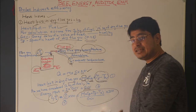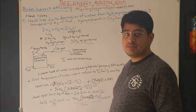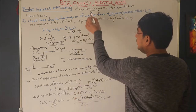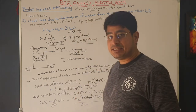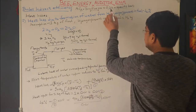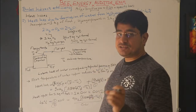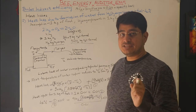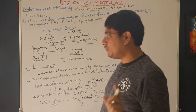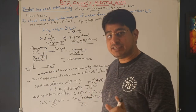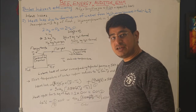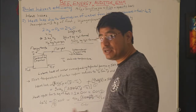Before proceeding, a correction: the specific heat of dry flue gas, Cp, if not given, should be assumed as 0.24 — not 0.45. The value 0.45 is the specific heat of wet flue gas or water vapor.